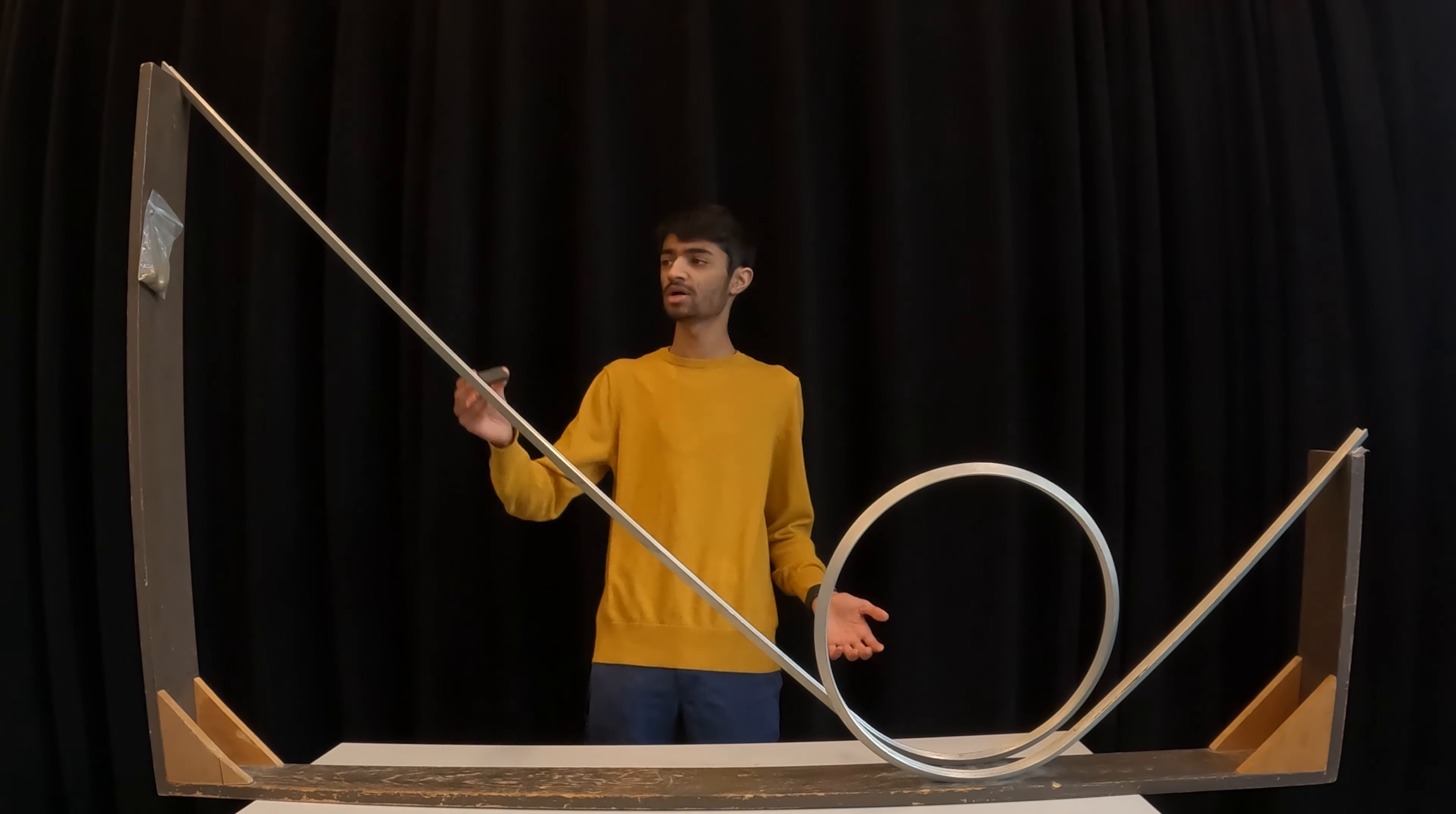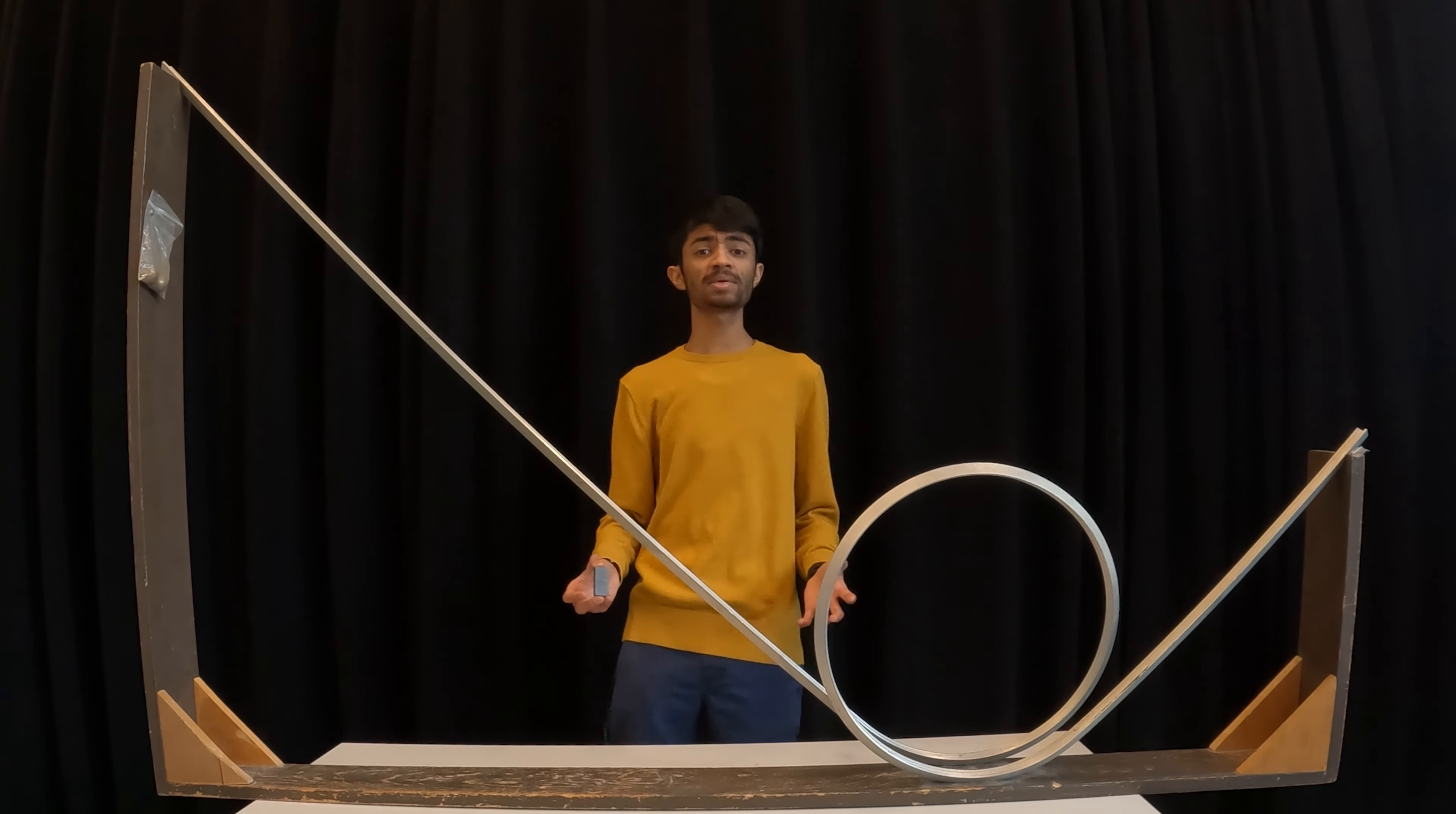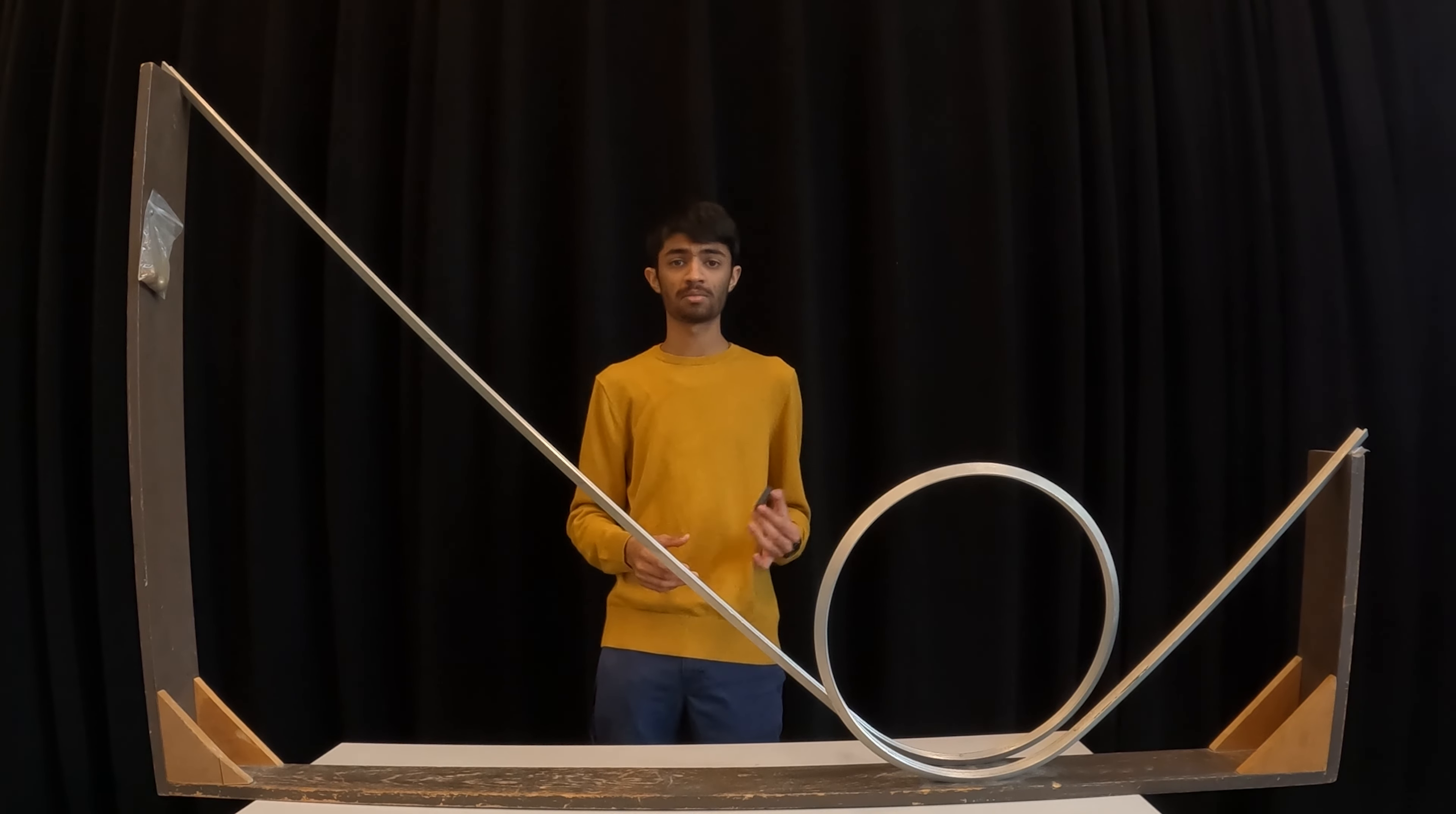All right, welcome. So now we're going to start with our roller coaster demo. We have a track here that's made of wood panels and a metal track to simulate a roller coaster, and we also have a metal block that we're going to use to simulate something going down the track.